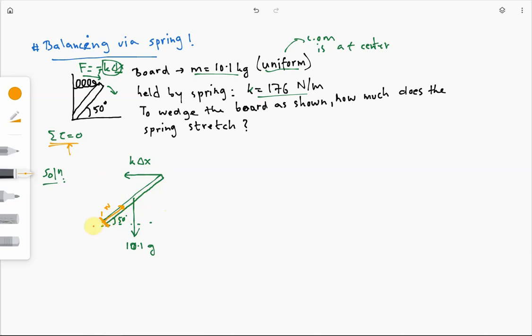But you have to define an axis. Since we don't know anything about this normal force from the wall on the board, let's choose this point. Let's call that x. Let's choose this point to be our axis of rotation. Okay?